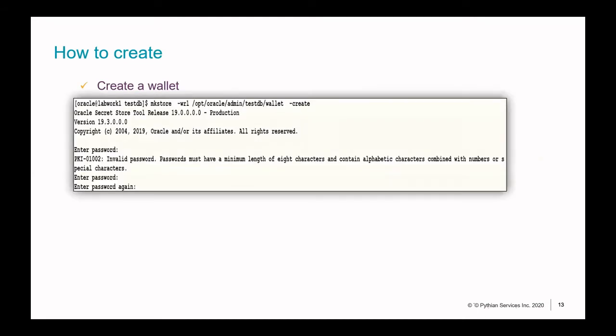Moving on — how do we create a wallet? We use a utility called mkstore. It's straightforward: you provide the path where you want to store the wallet (your wallet root location), use the mkstore command-line utility, provide a sufficiently complex password, and your wallet is created.